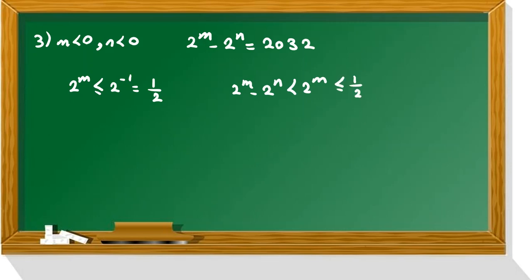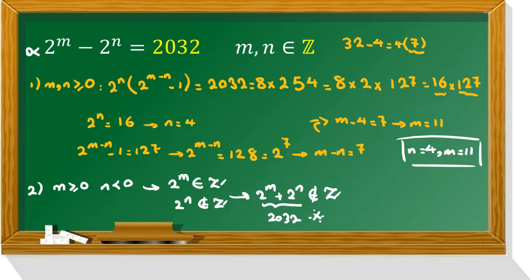It will be at most 1 over 2, but we know it's 2032. 2032 is less than 1 over 2, which is contradiction. So our only answer is n equals 4, m equals 11. Okay, if you have questions, send a message to my WhatsApp number. Please don't forget to subscribe, turn on the bell, and like the video. Thanks. See you next time. Bye.